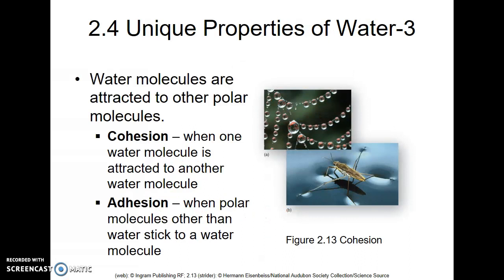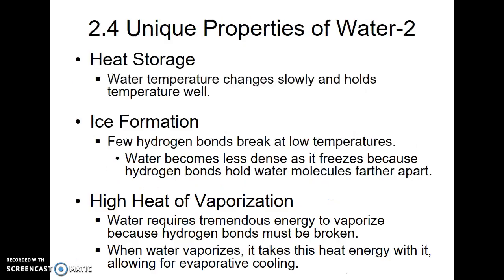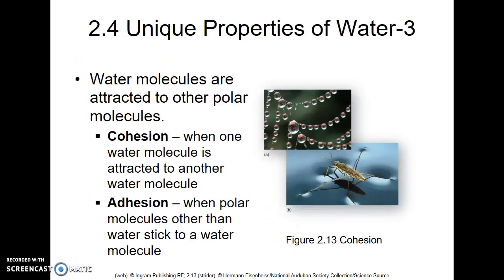The last two properties of water caused by hydrogen bonding are cohesion and adhesion. Cohesion means water molecules are attracted to one another, which allows for capillary action — water molecules cling to each other and can be pulled up through a straw or through a plant's xylem tissue. Adhesion means water molecules are attracted to other polar molecules, and this also helps with capillary action because water clings to the sides of the xylem or straw and is pulled upward. Make sure you know the five unique properties of water and understand they are caused by hydrogen bonding.